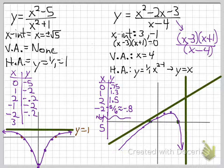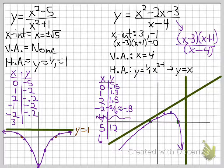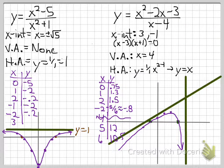For points to the right of the asymptote: x equals 5 gives (2)(6) over (1), which is 12. x equals 6 gives (3)(7) over (2), which is 21 over 2, or about 10.5. x equals 7 gives (4)(8) over 3, which is 32 over 3, about 10.6. Plotting 5 at 12, 6 at 10.5, and 7 at 10.6, we can see the graph comes off the asymptote and follows the y equals x end behavior as it continues.